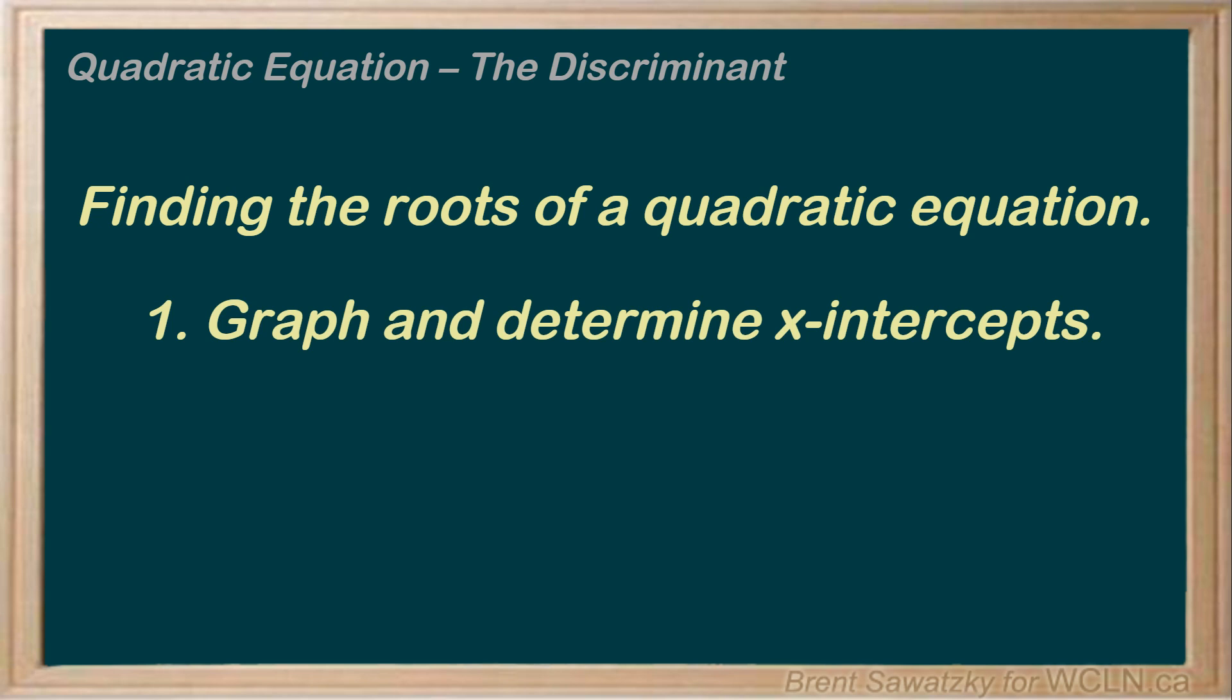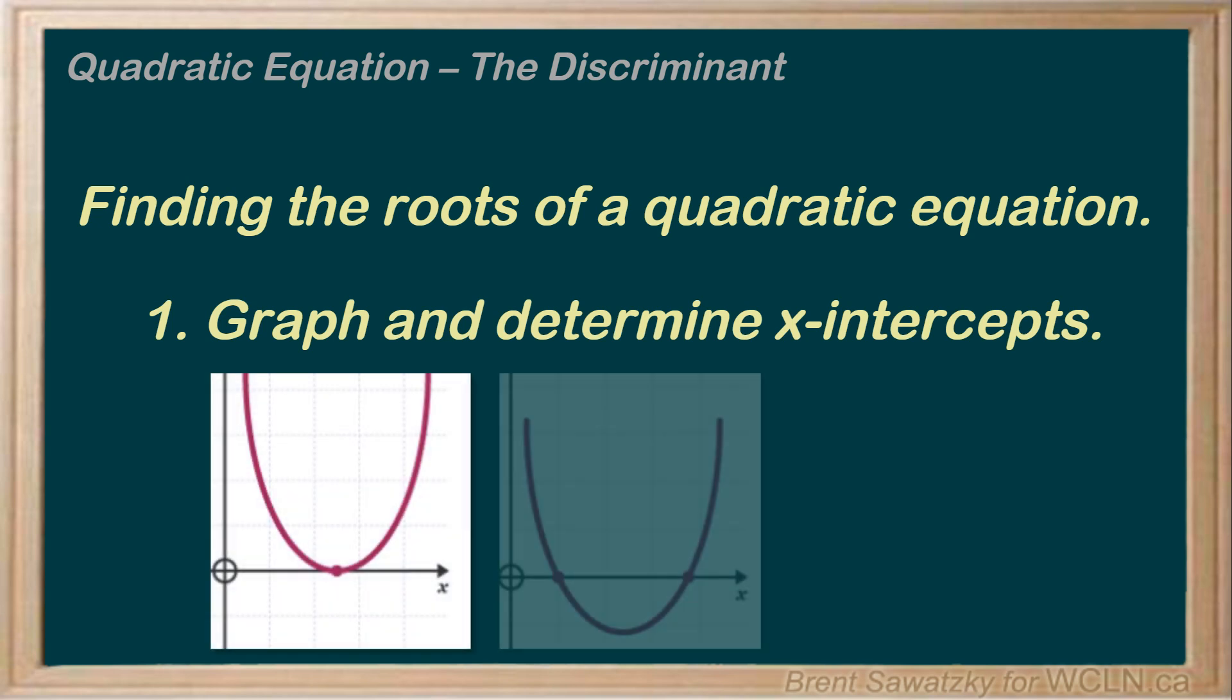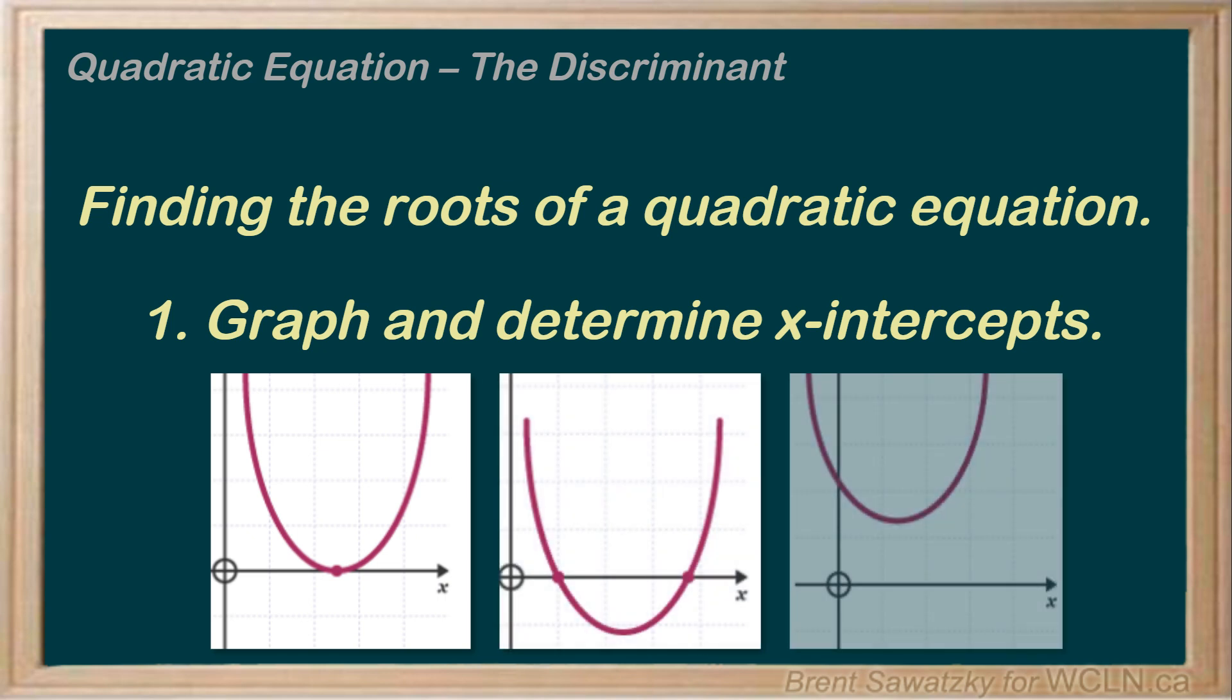The quadratic may intercept the x-axis once, twice, or not at all. Now this method is great, but the graph may or may not cross through a nice even number, so it may or may not be easy to read the root right off the graph.